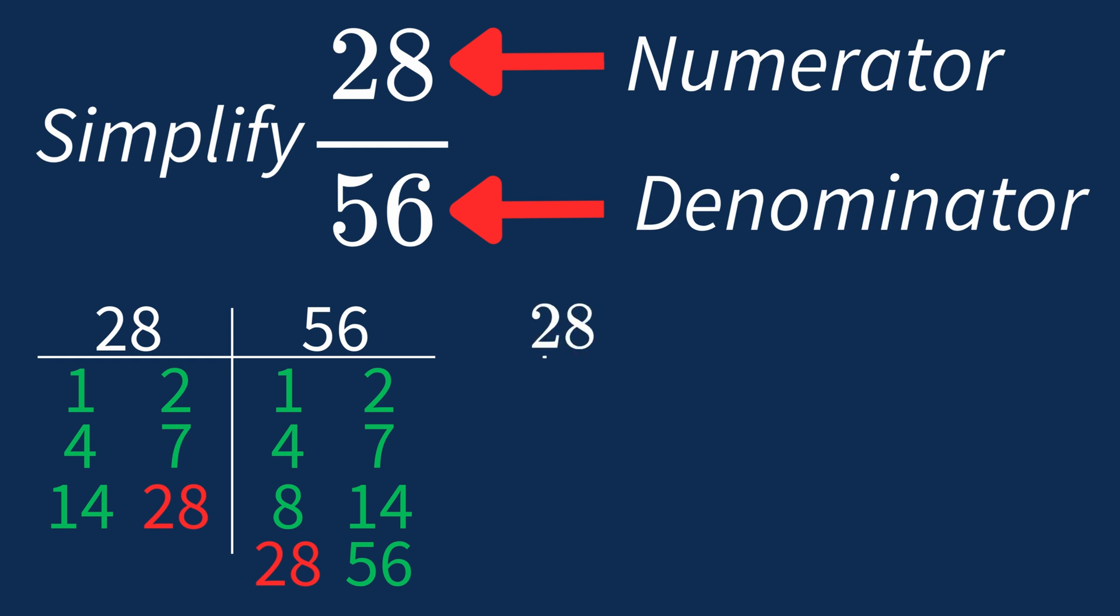Dividing the numerator, 28 by 28, gives us 1. Dividing the denominator, 56 by 28, gives us 2.